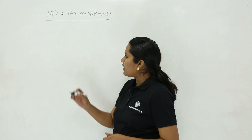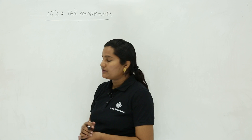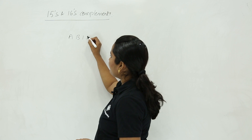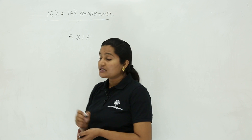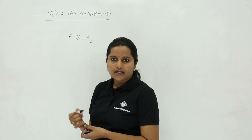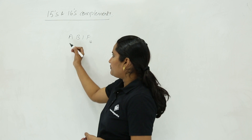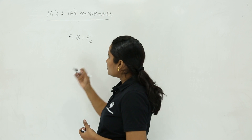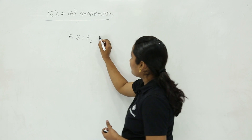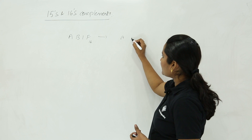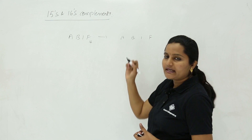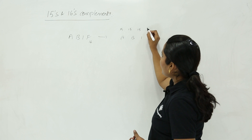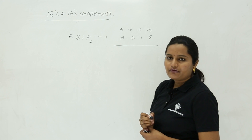So now see here how we are getting the 15's complement of any hexadecimal number. I am taking a hexadecimal number AB1F. So this is my hexadecimal number — this is a 4-digit hexadecimal number. Now we need to find out the 15's complement, so we need to subtract each and every digit of this 4-digit hexadecimal number from 15.